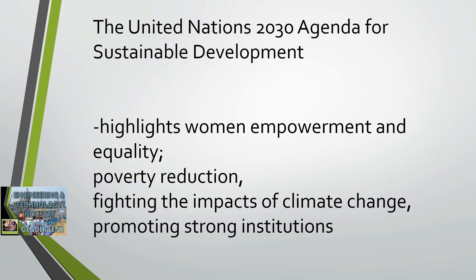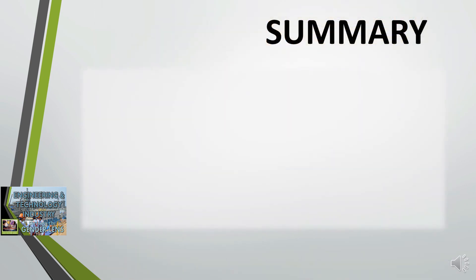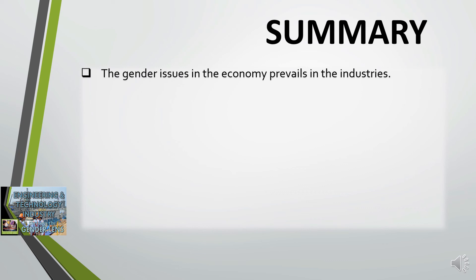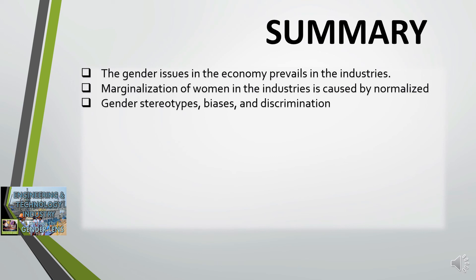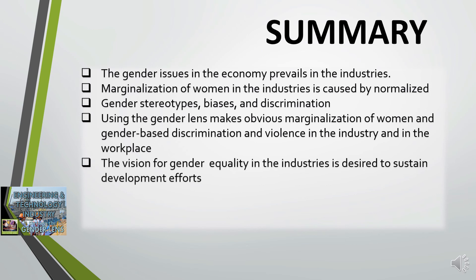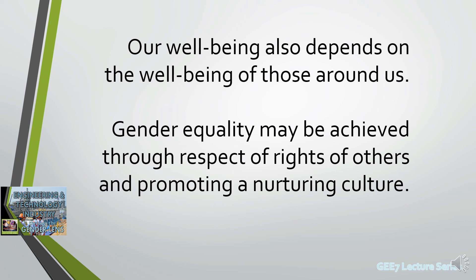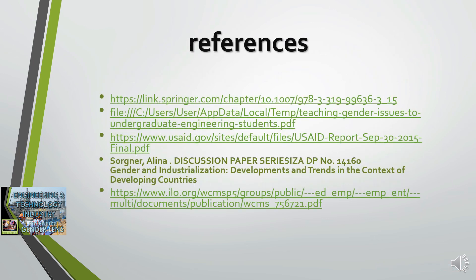The United Nations 2030 Agenda for Sustainable Development highlights women's empowerment and equality, poverty reduction, fighting the impacts of climate change, and promoting strong institutions. In summary: gender issues in the economy prevail in the industries; marginalization of women is caused by normalized gender stereotypes, biases, and discrimination; using the gender lens makes obvious the marginalization of women and gender-based discrimination and violence, enabling management interventions to address them. The vision for gender equality is desired to sustain development efforts. It takes leadership, reforms in policy and practice to achieve gender equality. Our well-being depends on the well-being of those around us, and gender equality may be achieved through respecting the rights of others and promoting a nurturing culture toward a more humane and equitable society.